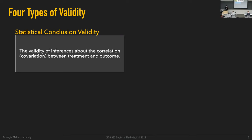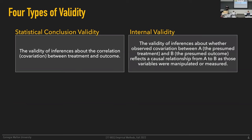Statistical conclusion validity is the first one. The name implies the question: are the correlations, inferences, and results of your statistical analyses of the data you collected — say from running an experiment — valid? Do they actually reflect the true relationship between your treatments and the outcome? Issues having to do with the validity of the statistics you're running on the data you're collecting fall into this category.